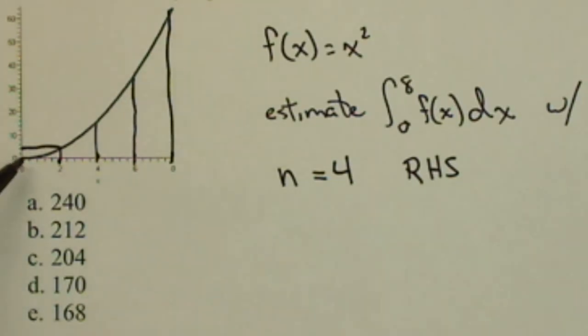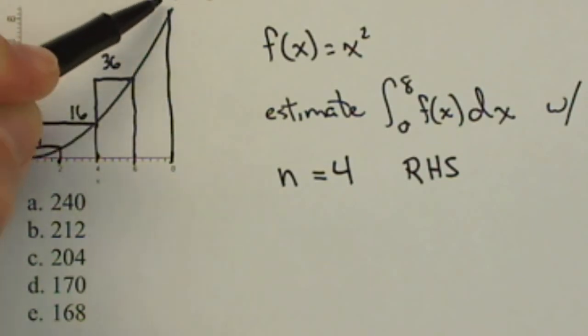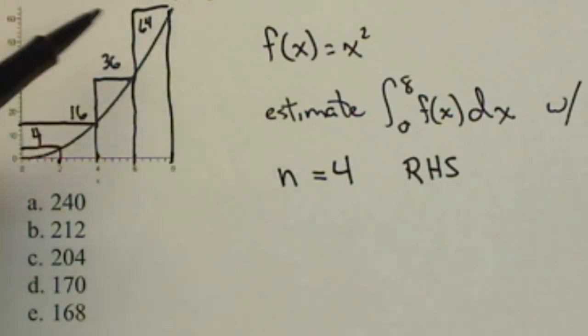Now, it may be hard to estimate from the graph where these are heading, but remember we know the function. It's x squared, so 2 squared is 4, so the height of that rectangle is 4. 4 squared is 16. 6 squared is 36. And 8 squared is 64, so those are the heights.